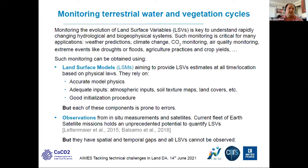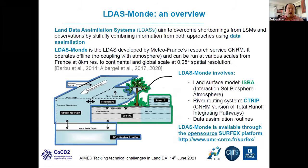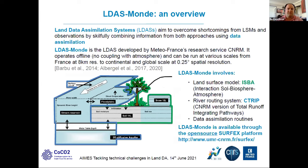Such monitoring can be obtained using land surface models or observations — mainly in situ measurements or satellites. Here I'll talk about land data assimilation systems, as they overcome shortcomings from both land surface models and observations by combining information from both approaches. This is LDASMON, the land data assimilation system developed by Météo-France's research service CNRM. It operates offline — no coupling with the atmosphere — and can be run at various scales, from France at 8-kilometer resolution to continental and even global scale at quarter-degree resolution. It was published in a paper by Albergel et al. last year.